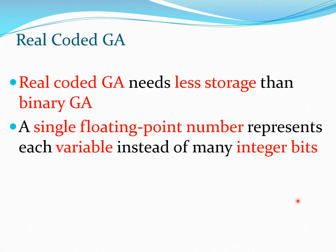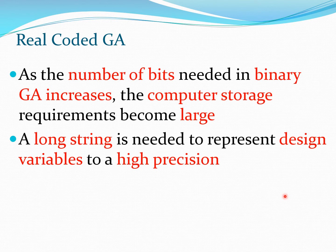One advantage of real coded GA is that it may need less storage than binary GA, because you use a single floating point number to represent each variable instead of multiple bits. In binary GA, if you want high precision, you need a large number of bits — 8, 16, or more — which increases storage requirements, and a very long string is needed to represent variables to a high level of precision.